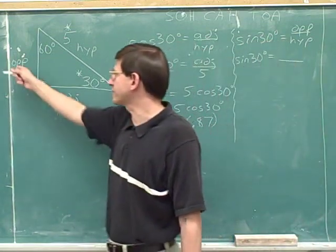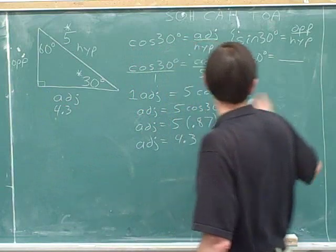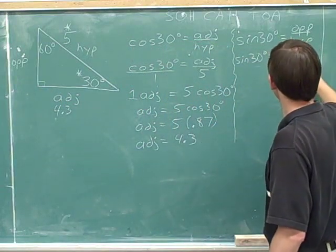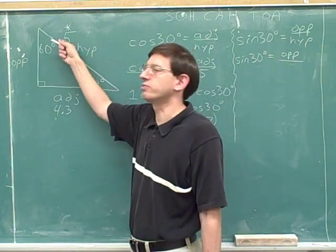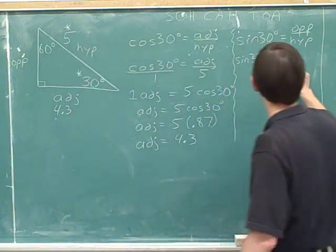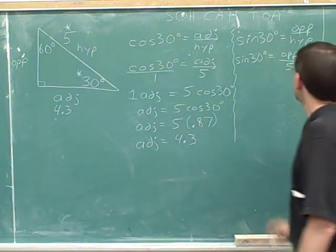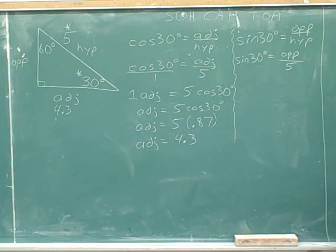Now, what should I plug in for the opposite side? Well, we don't know the opposite side, so we have to leave that as a variable. What should we plug in for the hypotenuse? Well, that was the information we were originally given, 5. So we can plug in 5 for the hypotenuse.